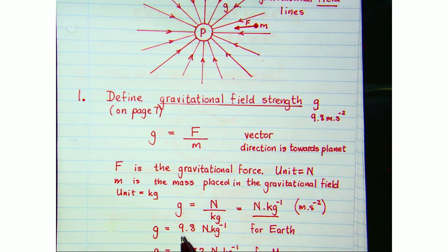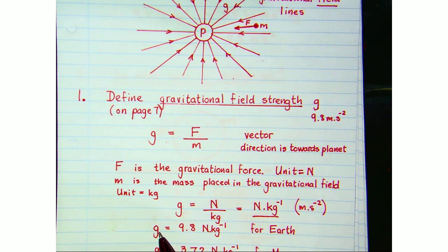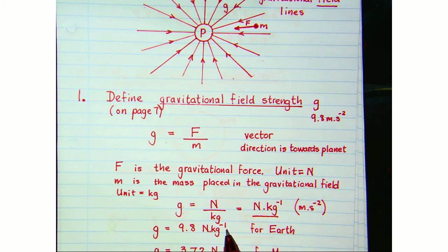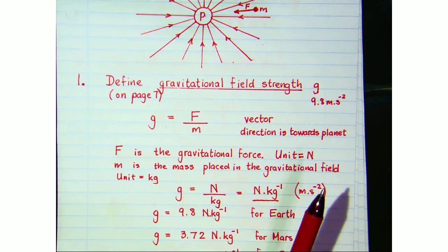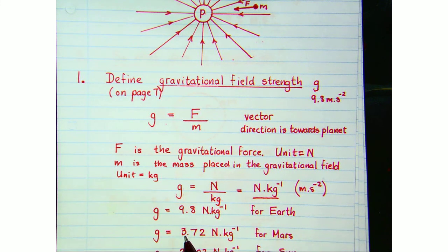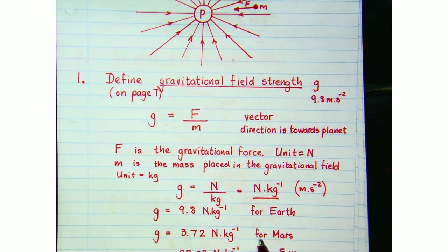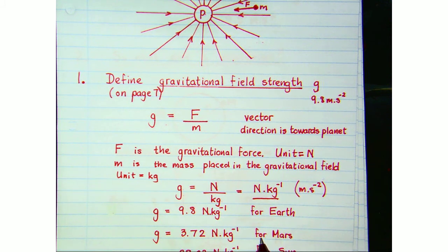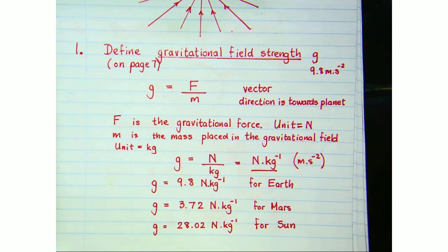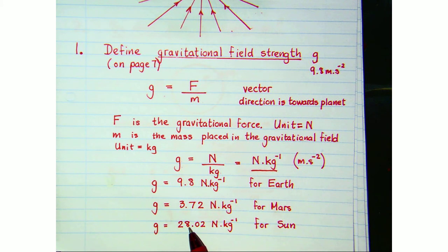On Earth, the gravitational field strength at the surface of the planet is 9.8 newtons per kilogram. If we went to Mars, we would find the gravitational field strength on the surface is a lot less — 3.72 newtons per kilogram. And if we went to the Sun, we would find that the gravitational field strength on its surface would be just over 28 newtons per kilogram.